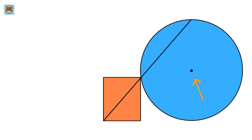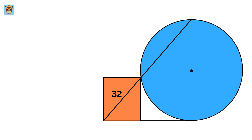This is the center of this circle, and this is the point of contact of this circle with the ground. It is given that these three points are collinear, which means they lie on a straight line. The diagonal of this rectangle is 32 units, and the length of this chord is equal to 18 units.